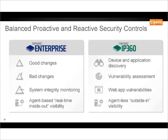Just one slide on a couple of Tripwire products that can help. Tripwire Enterprise can monitor for good and bad changes and give you an overall view of system integrity in real time. And IPC60 covers vulnerability assessment — understanding not only what's on the network in terms of hardware and software versions, but also whether you're vulnerable to anything. These products can work in conjunction to complement each other.